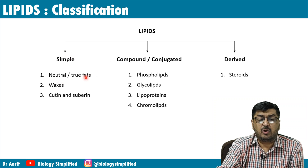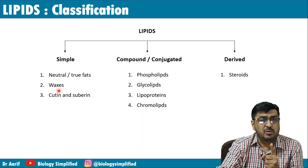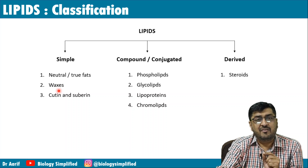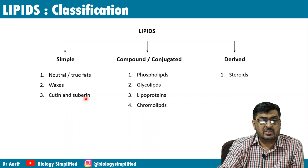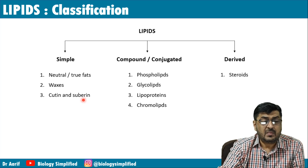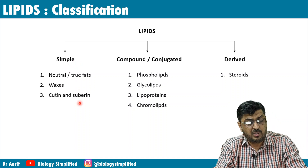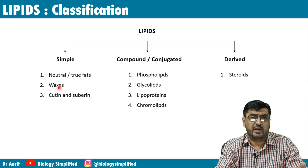Under simple lipids we have neutral or true fats and waxes, as well as cutin and suberin. Note: wax is a simple lipid. The word suberin should ring a bell — Casparian strip, endodermis, suberin — it is a lipid that prevents water from passing through, related to symplast or apoplast pathways. Under conjugated lipids we have phospholipids, glycolipids, lipoproteins, and chromolipids. Under derived lipids we have steroids.